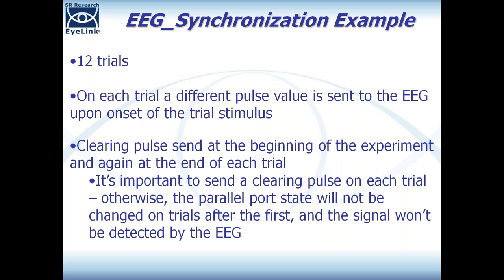I have a couple different Experiment Builder examples that I've programmed, and I'll post them to the same forum thread that had the webinar announcement after we're done. In this EEG synchronization example, there are 12 trials. On each trial, a different pulse is being sent to the EEG device upon onset of the trial stimulus. You can use these pulse values to give yourself information about the type of trial in data analysis — either coding different trial events or different conditions across trials.